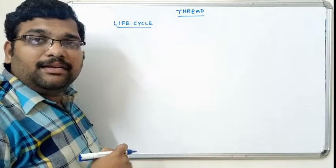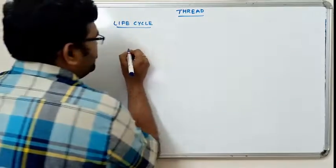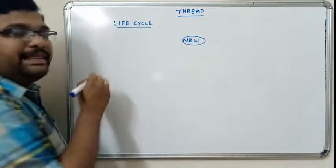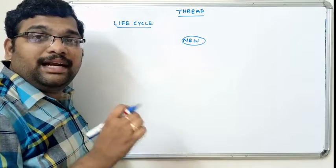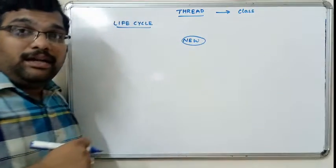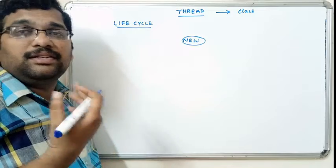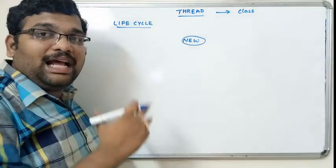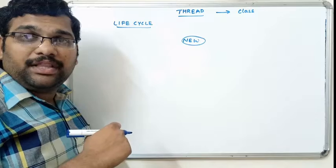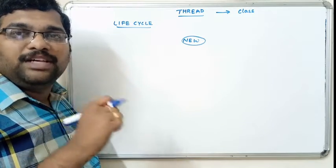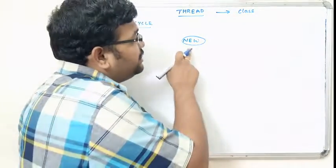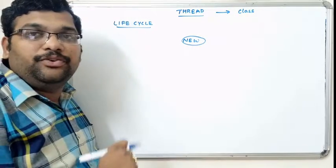Whenever a thread is created, it will be in the new state. In Java, a thread is a class, and a class consists of a number of methods, variables, constructors, and so on. The thread class also consists of a number of methods. In order to access those methods, first we have to create an object for the thread. After the creation of that object, the thread will be in the newborn state.